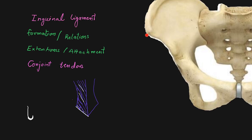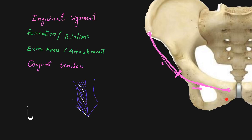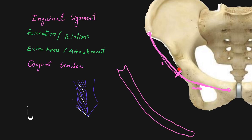In the pelvic bone, the anterior superior iliac spine is the lateral bony landmark, and the pubic tubercle is the medial bony landmark. The external oblique aponeurosis gets thickened, folded backward, and forms the inguinal ligament between these two points. In its lateral half it is rounded and oblique, while in its medial half it is grooved upward and almost horizontal. From a superior view, this medial half forms the floor of the inguinal canal, lodging the spermatic cord in males or the round ligament of the uterus in females.